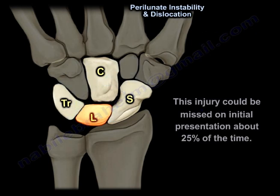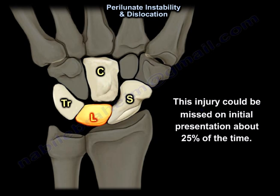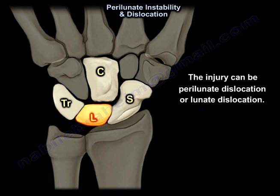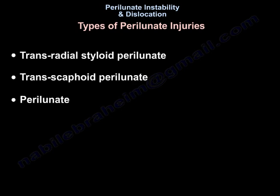This injury can be missed on initial presentation about 25% of the time. The injury can be perilunate dislocation or lunate dislocation. The types of perilunate injuries include: transradial styloid perilunate, transscaphoid perilunate, or perilunate.